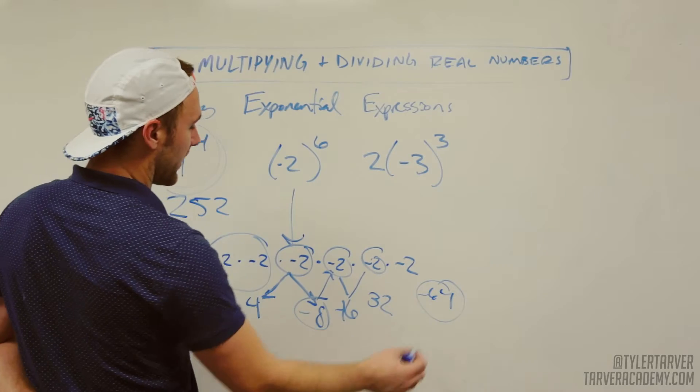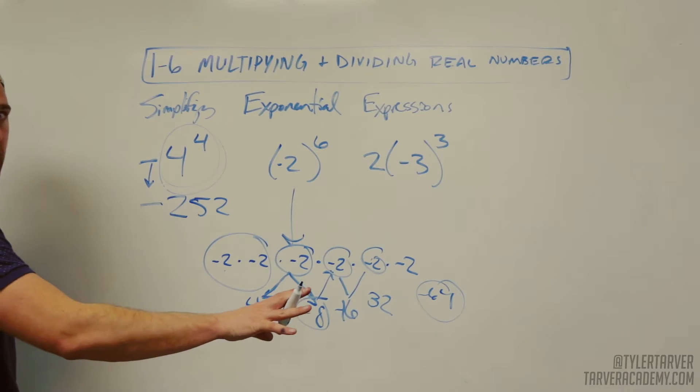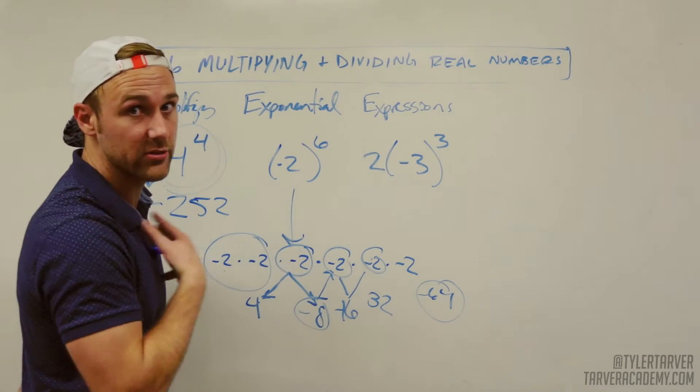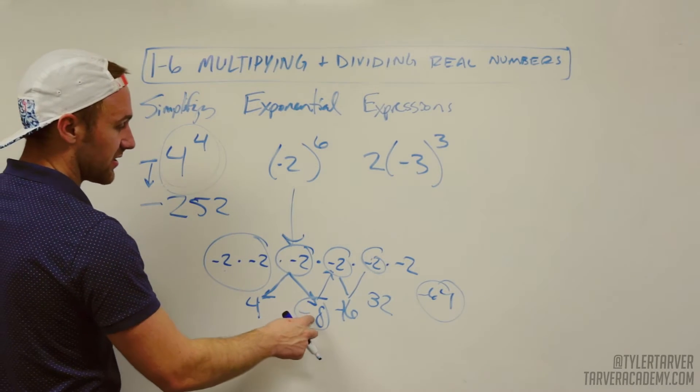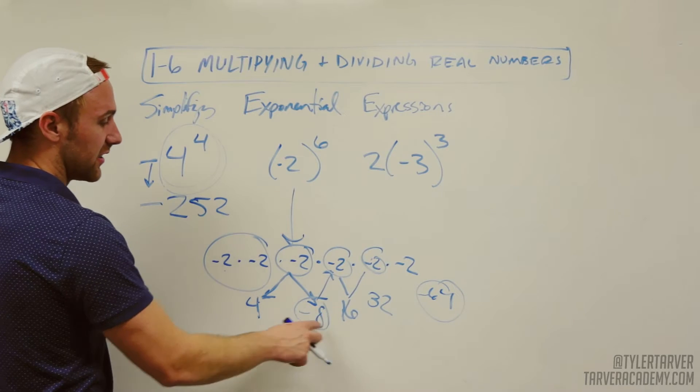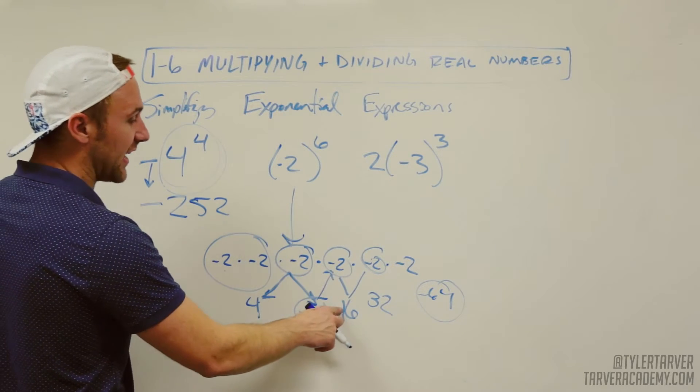That doesn't seem right. Is that right? That's not right. Where'd I mess up, guys? Where'd I mess up? Help me. I'm going to keep this real. I'm going to keep it real. Tyler, I'm going to keep it real. Negative two times negative two is a positive four times negative two is negative eight. Oh, I messed up right here, guys.